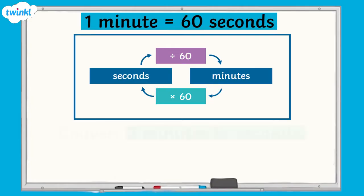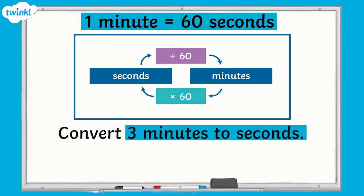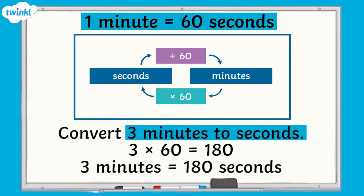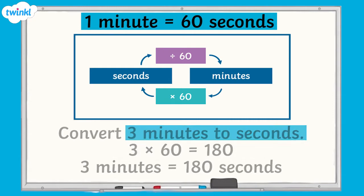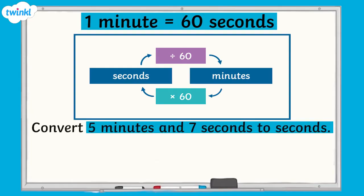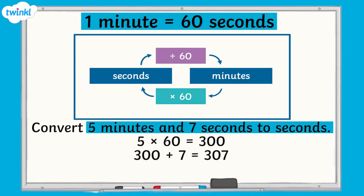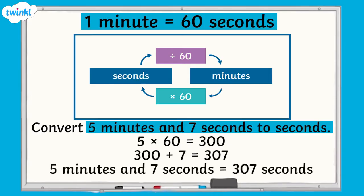For example, to convert 3 minutes to seconds, we would multiply 3 by 60. 3 multiplied by 60 equals 180, so 3 minutes equals 180 seconds. To convert 5 minutes and 7 seconds to seconds, we would multiply 5 by 60, which equals 300 seconds, and then add on the 7 seconds. 5 minutes and 7 seconds equals 307 seconds.